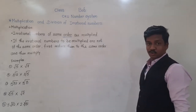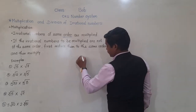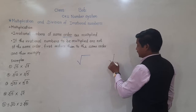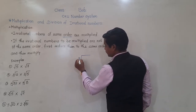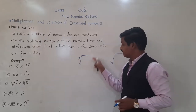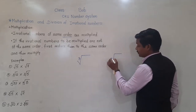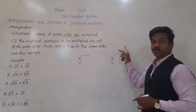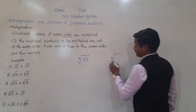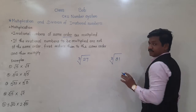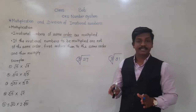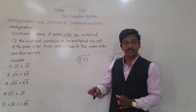Now what is meant by 'order'? Yesterday I told you — order refers to the number written in the radical sign. This is called the radical sign. Suppose there are two radical signs. If there is the number 3 here, it is called cube root. So this sign is called cube root. The 3 represents the order of this irrational number.